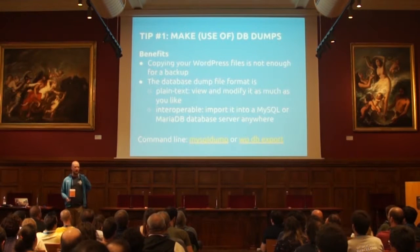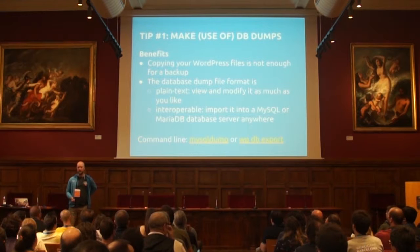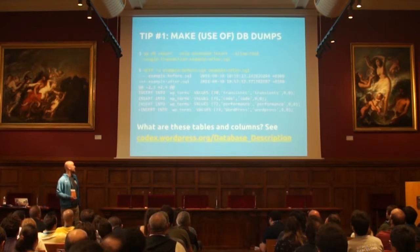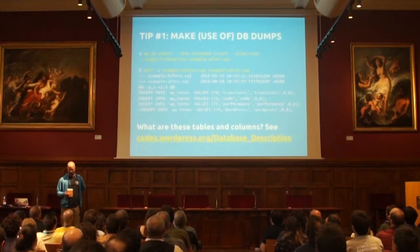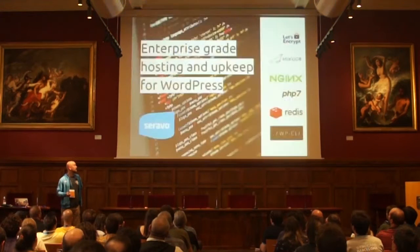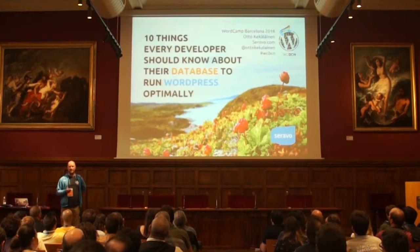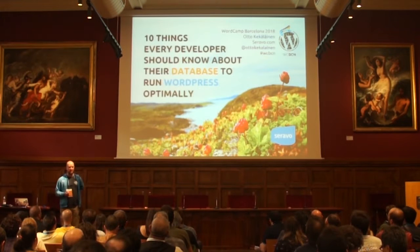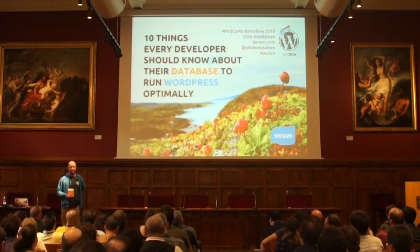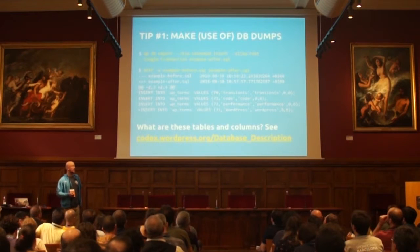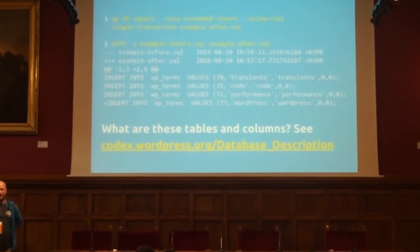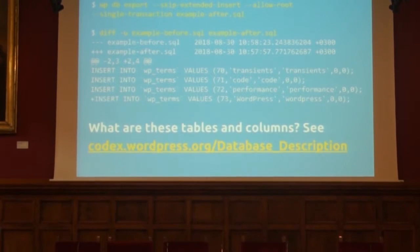You can do that using the traditional mysqldump tool or using WP-CLI. Here is the command I use to make database dumps — my slides have quite a lot of code examples, so you might want to look at them afterwards. I will post my slides on my Twitter account. You can, for example, make two database dumps before and after you change a setting, and then use diff on the text files to find out what changed in the database.